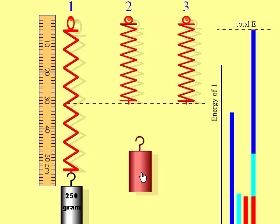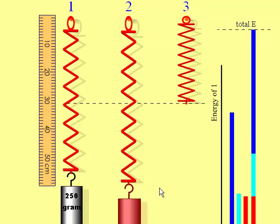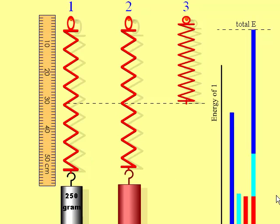Once you find the spring constant, you should be able to figure out what the mystery masses are, and you can move this ruler all around.